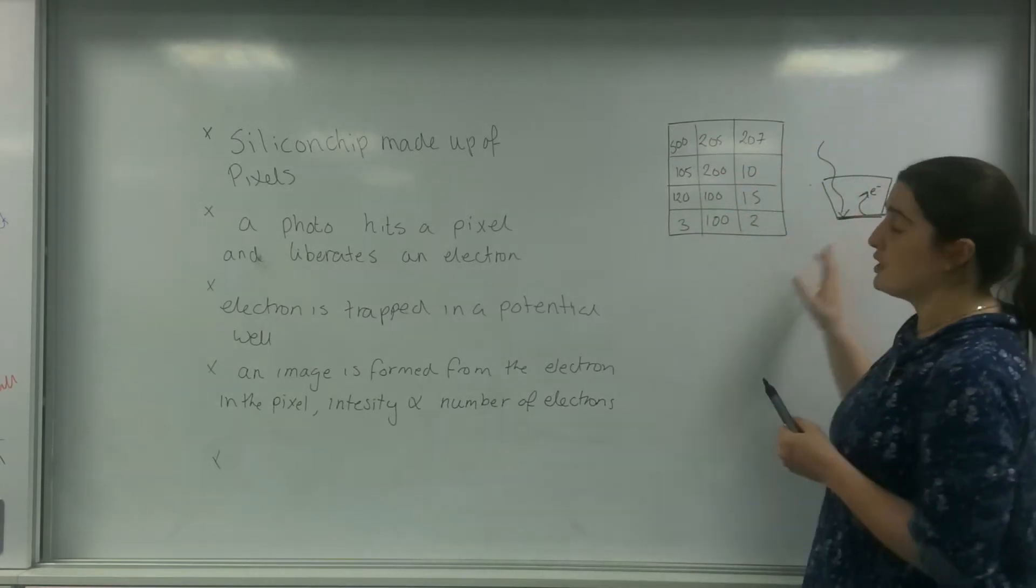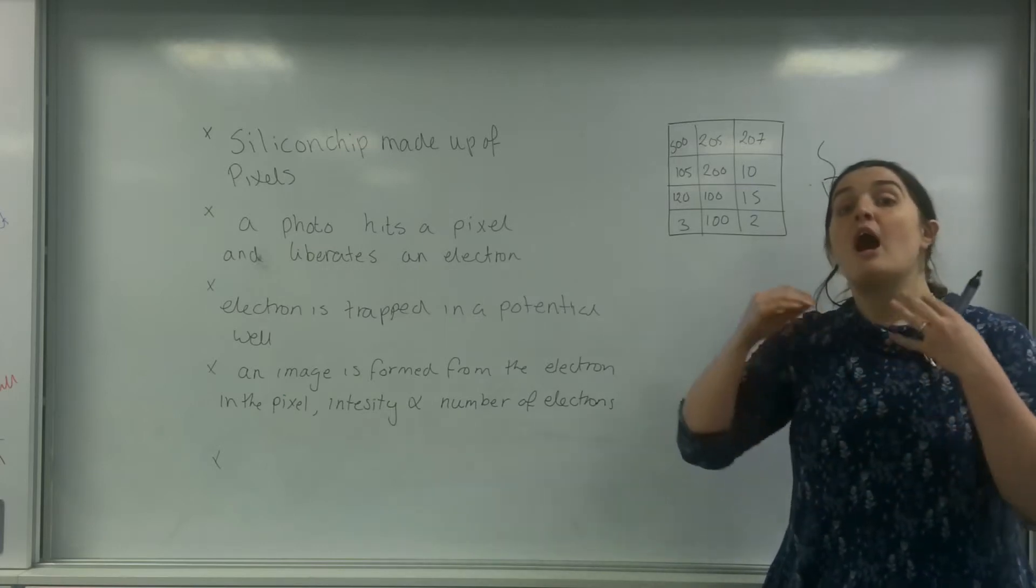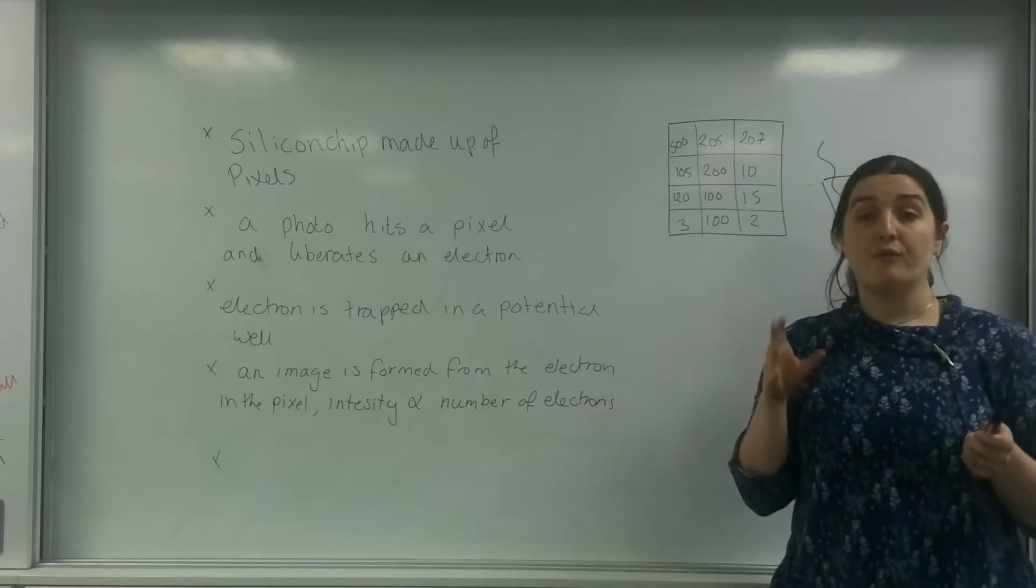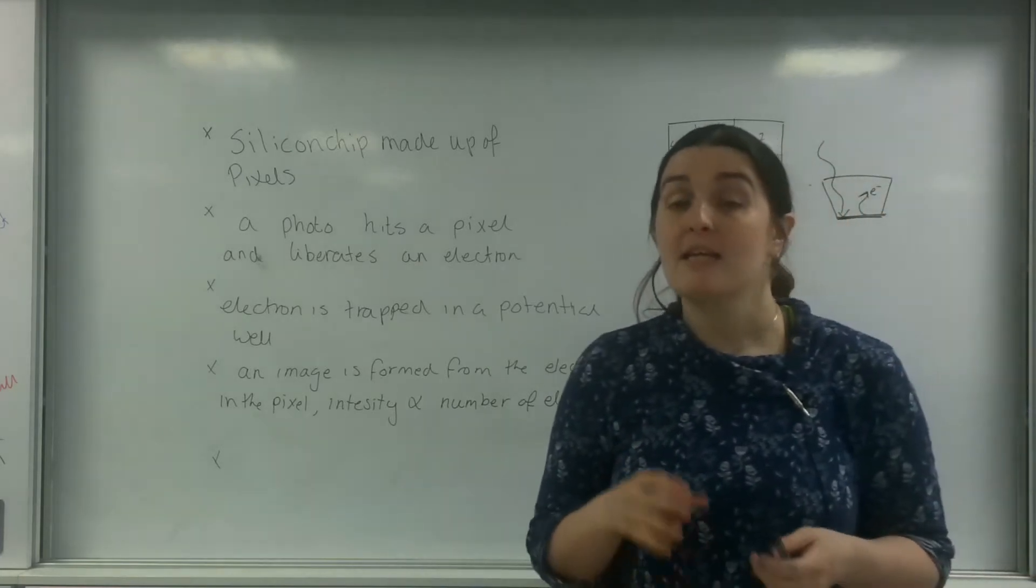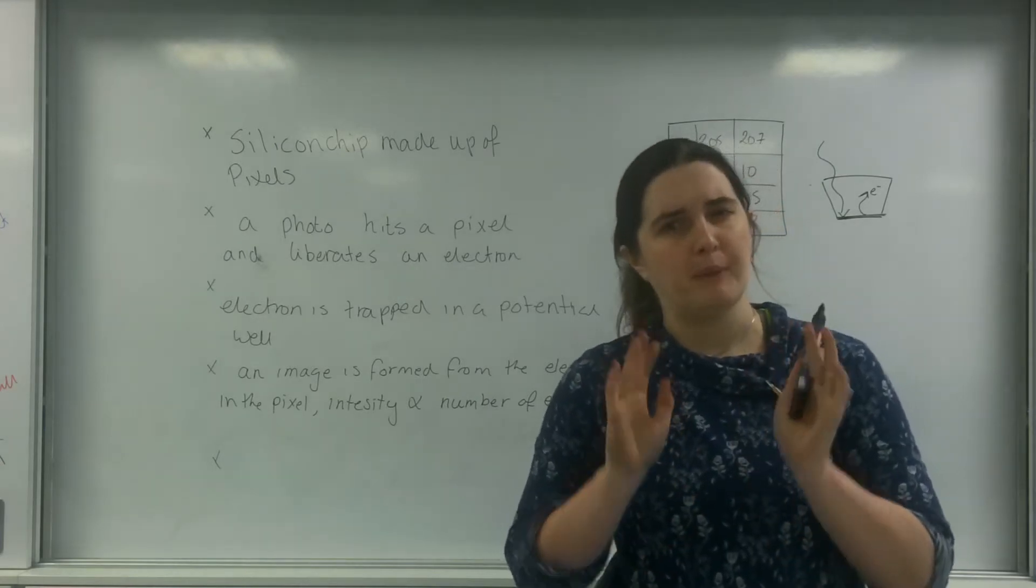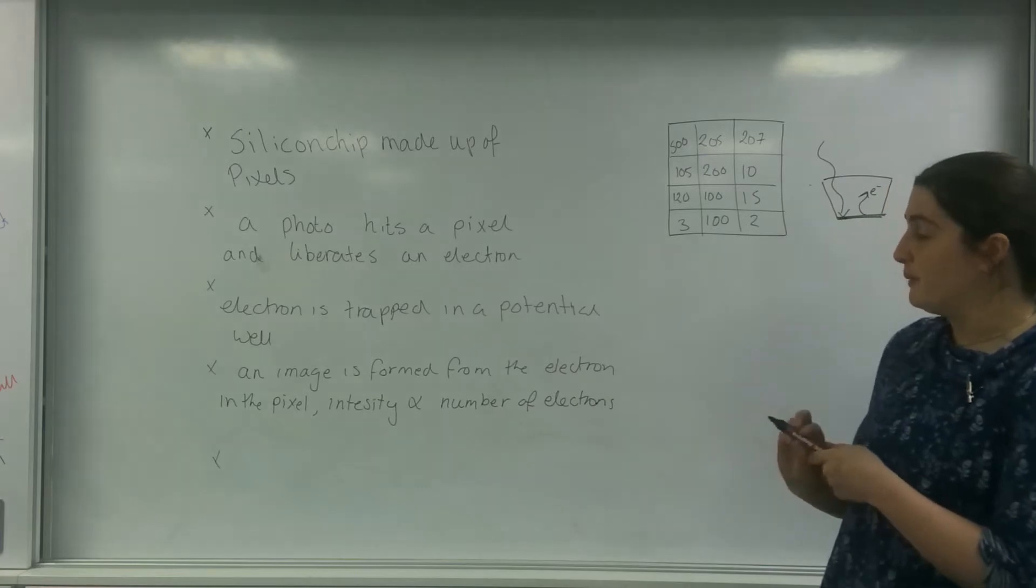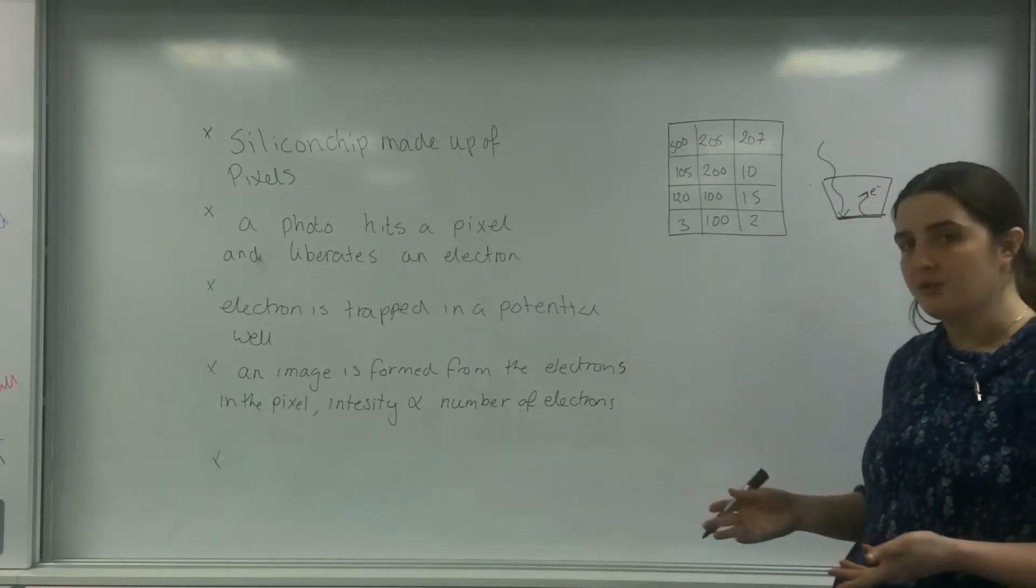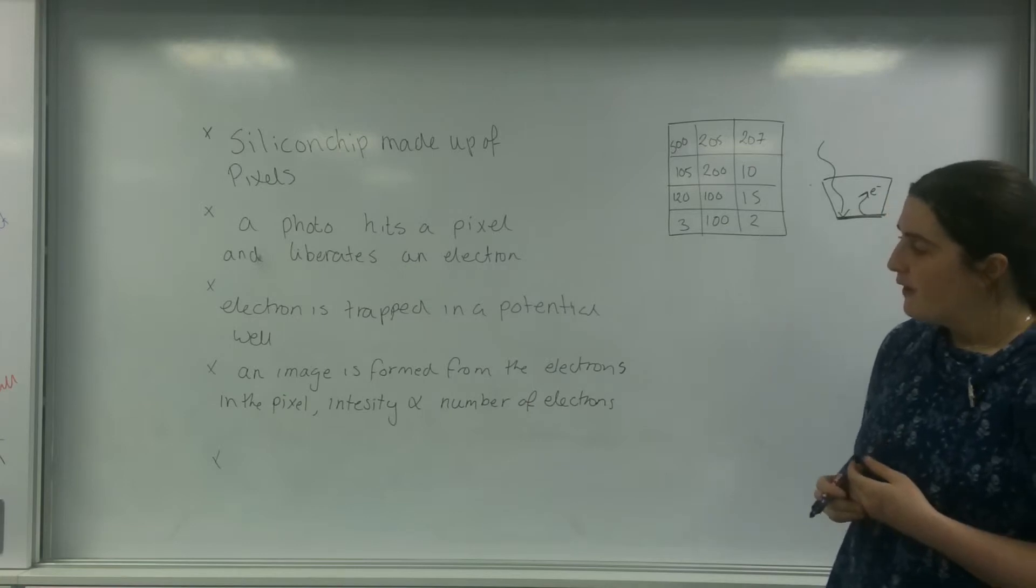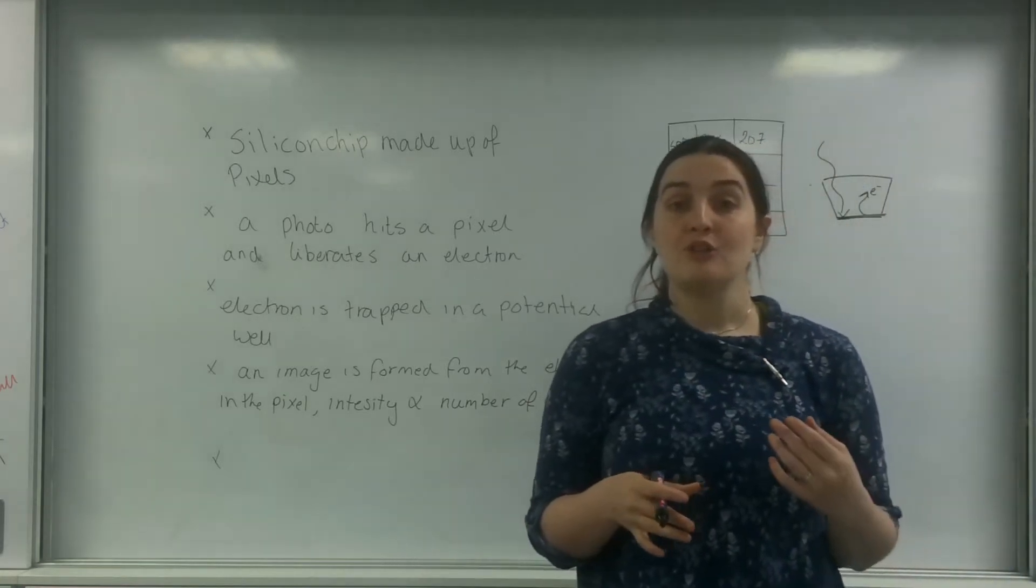Now you can imagine these silicon chips hold hundreds upon thousands upon millions of these pixels. So the kind of detail I can get can be astronomical, pardon the pun. An image is formed from the electrons in the pixel, and the intensity is proportional to the number of electrons.